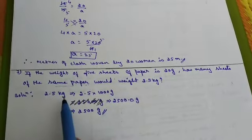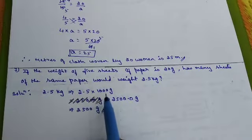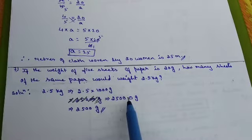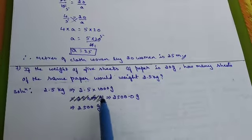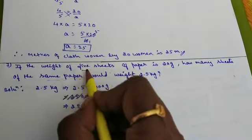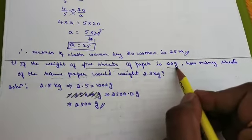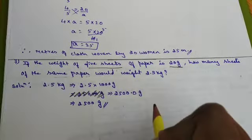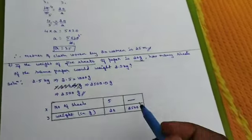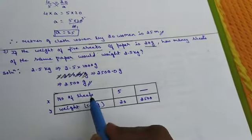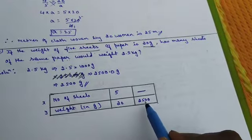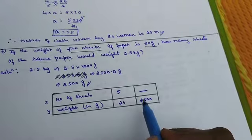Solution: 2.5 kg, we know that 1 kg equals 1000 grams, so 2500 grams. What are the two quantities? One is number of sheets of paper and the other is its weight in grams. First we will prepare the table. Number of sheets 5, and weight 20. If the weight increases to 2500 grams...